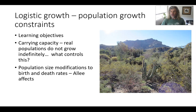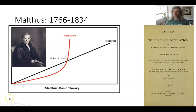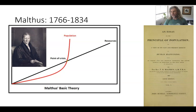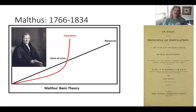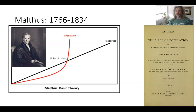These are called Allee effects. A little bit of history: sometimes this is referred to as Malthusian growth. Malthus is a philosopher who was writing about 200 or so years ago. Malthus was pointing out that exponential growth couldn't go on forever. It was mostly focused on human populations and he anticipated the pain and suffering that would come from unconstrained growth.